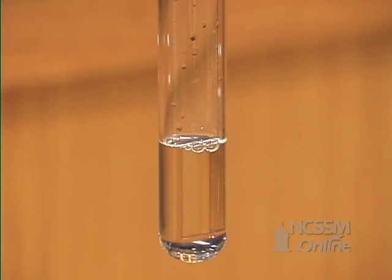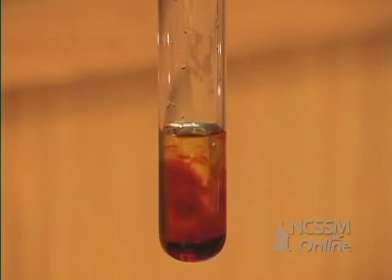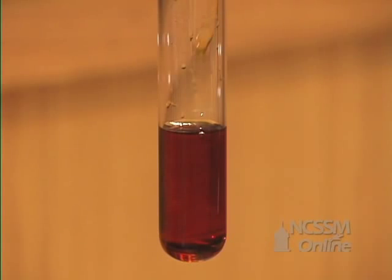The potassium iodide solution is colorless. When we add the aqueous solution of chlorine, the chlorine displaces the iodine from the potassium iodide, and we get the formation of a reddish-brown solution of iodine.